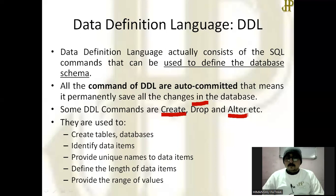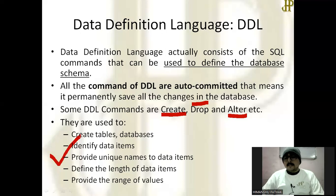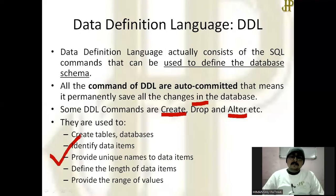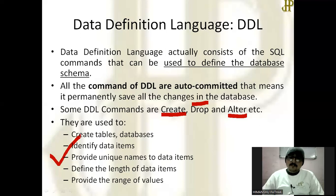DDL is used to create tables or databases, identify data items, provide unique names to data items such as column names, and define the length or capacity of a column — for example, a name column can contain only 15 characters at a time. DDL also provides the range of values, which is the domain. For example, a marks column can range from 0 to 100; you cannot give negative values or marks greater than 100.